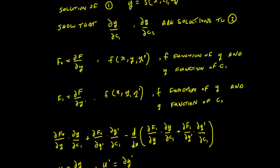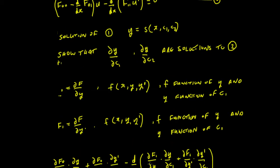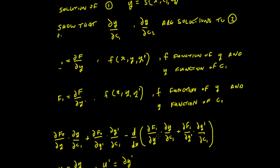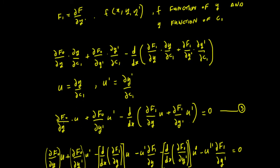So let's go ahead and differentiate these out. We're looking at differentiating the first term with respect to C1, so it's going to be partial F0 over partial y times partial y over partial C1 — just a chain rule — and the same for the y-prime term: partial F0 over partial y-prime times partial y-prime over partial C1. Then the second part: minus d/dx of partial F1 over partial y times partial y over partial C1, plus partial F1 over partial y-prime times partial y-prime over partial C1. Now we'll simplify by writing partial y over partial C1 as u, and partial y-prime over partial C1 as u-prime, and substituting in, we just get the equation below.